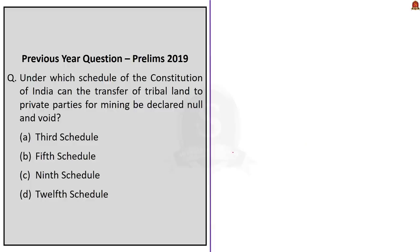The second question was also asked in Prelims 2019 and is from Polity. Under which schedule of the Constitution of India can the transfer of tribal land to private parties for mining be declared null and void? Option A: Third Schedule. Option B: Fifth Schedule. Option C: Ninth Schedule. Option D: Twelfth Schedule. Schedules are an important topic in Polity — in the past 5–6 years, UPSC has asked 3 to 4 questions from schedules, so give them high priority.